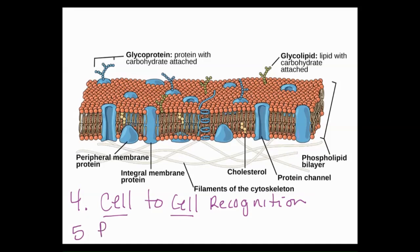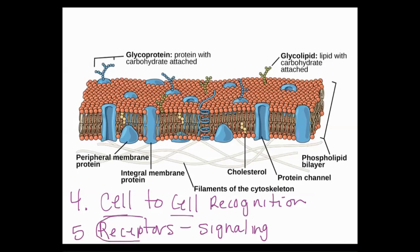Finally, proteins in the membrane can serve as receptors. Receptors allow an outside chemical to interact with a plasma membrane and start a whole series of signaling to the inside of the cell. For example, if it's time for a cell to make a certain protein, a chemical from outside the cell might attach to a receptor, starting a cascade of events inside the cell so that transcription and translation take place and a protein is ultimately produced. The transport protein is the one that is defective in a person with cystic fibrosis.